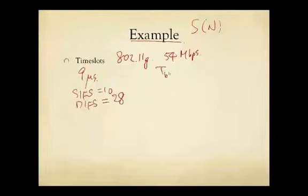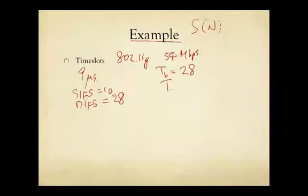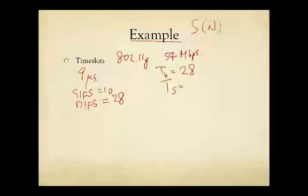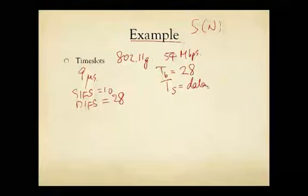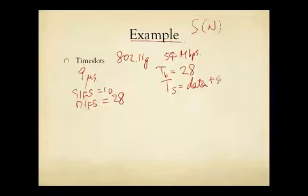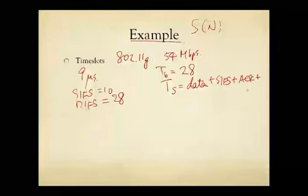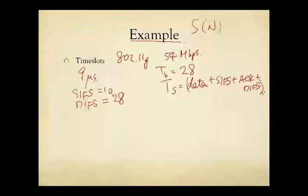Now we can look at TB, that is the time slot length for a backoff slot with idle channel. That's the length of DIFS, so that's just 28 microseconds. What about the time slot for a successful transmission? That means we have the data frame itself plus waiting SIFS plus acknowledgement packet plus waiting DIFS. This totality is the TS.